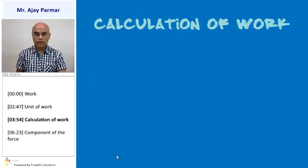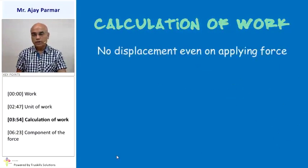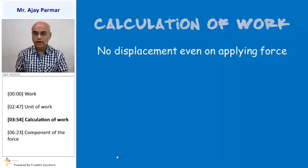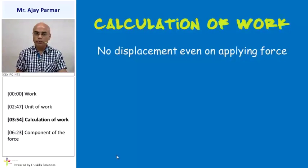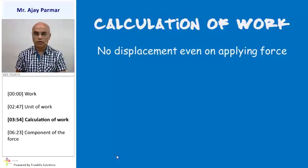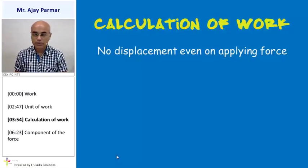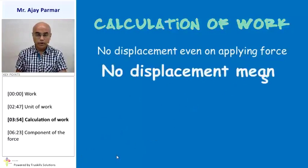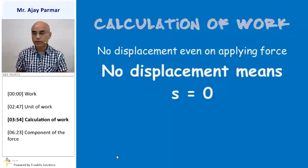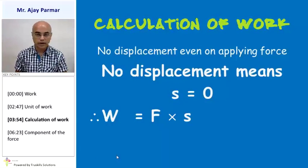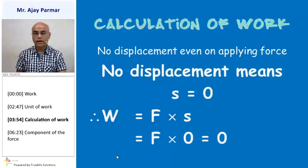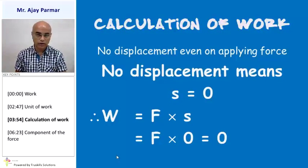How do we calculate work in different cases? First, suppose there is no displacement even after applying force. For example, you apply force on a wall — you try to push it, but the wall does not move. So even if force is applied, there is no displacement. The value of S is zero. Since W = F × S, substituting S = 0, work done will be equal to zero.